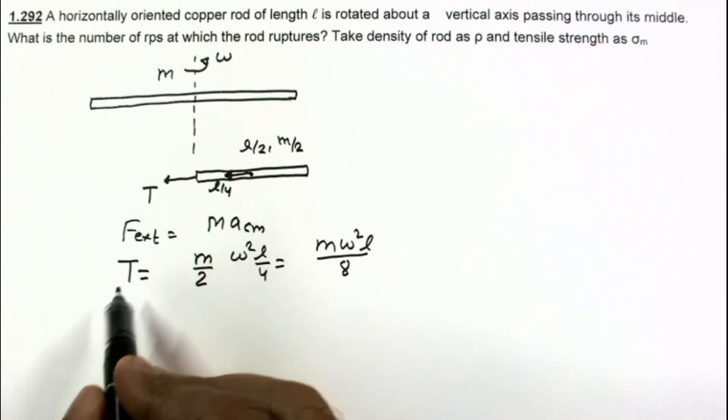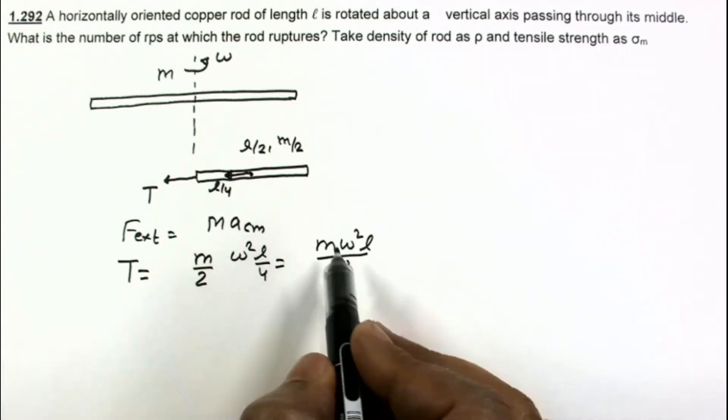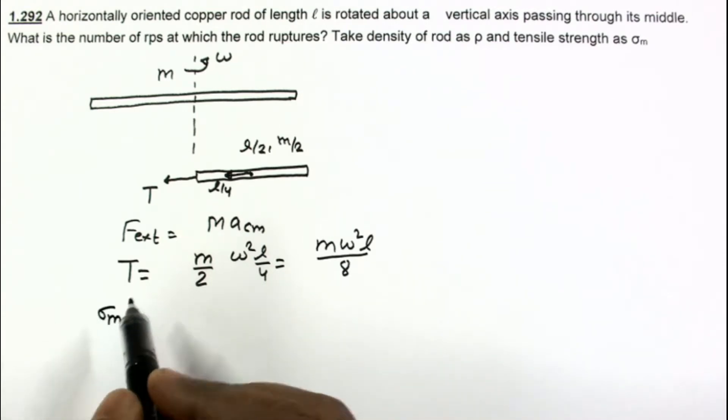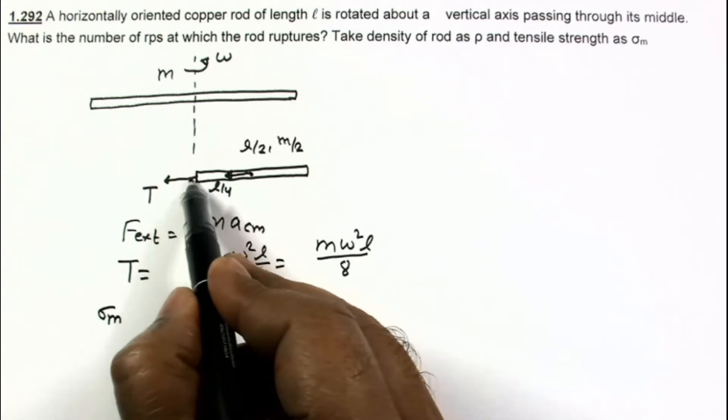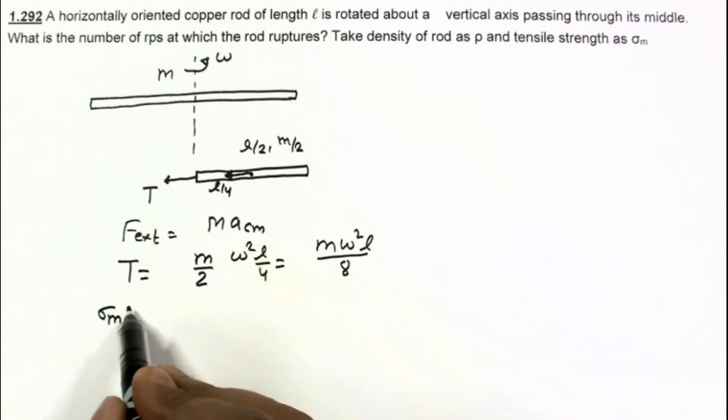This tension can be written for that particular value of ω as σ_m multiplied by the cross section area. Suppose the cross section area of the rod at which this tension is acting is A. So T is σ_m multiplied by A.